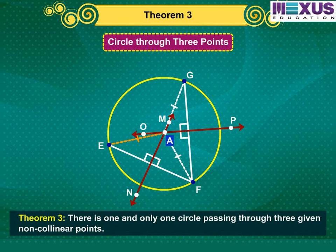Thus, we have proved the following theorem: There is one and only one circle passing through three given non-collinear points.